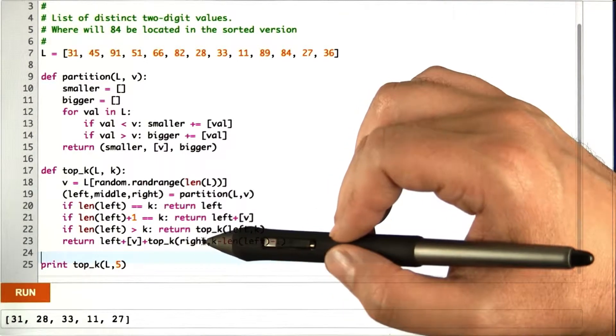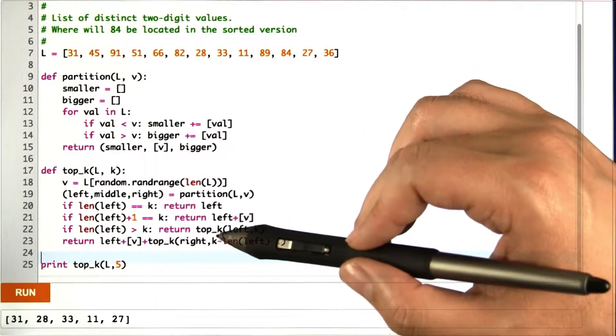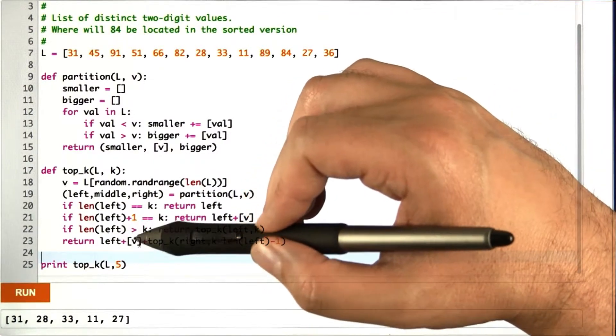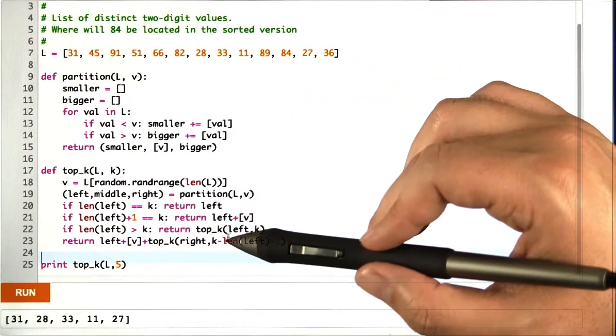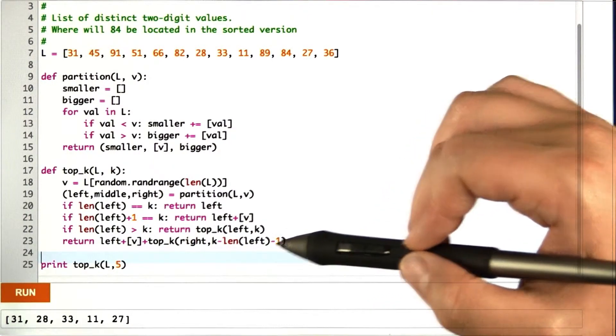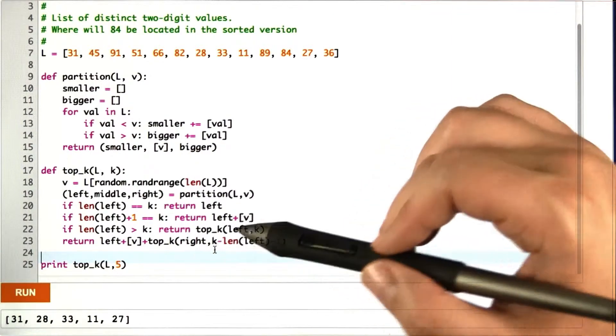So we're going to search through the list on the right. And how many things do we want off the right? Well, we wanted k, but we found length of left plus 1 already. So we can just subtract that off from the number that we want, call top k recursively, and we're done.